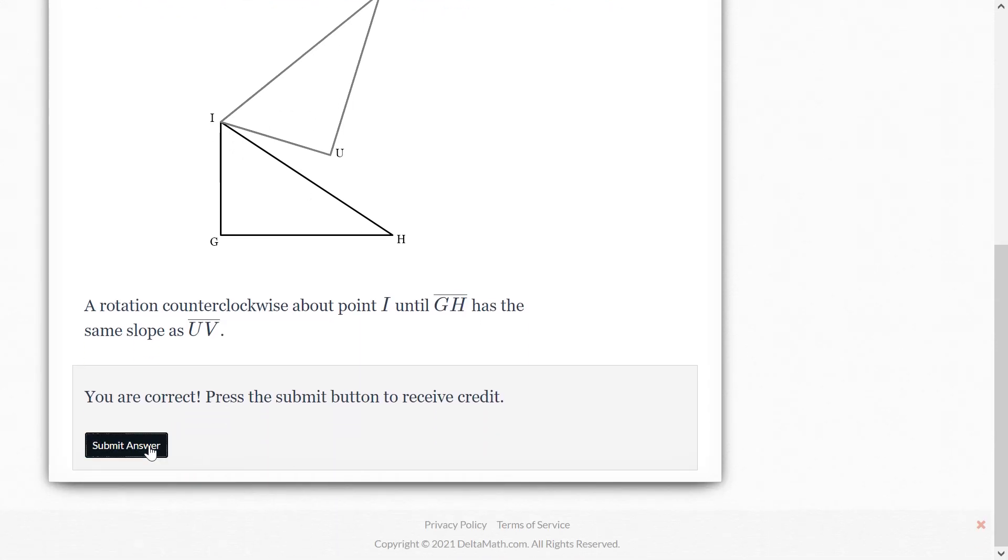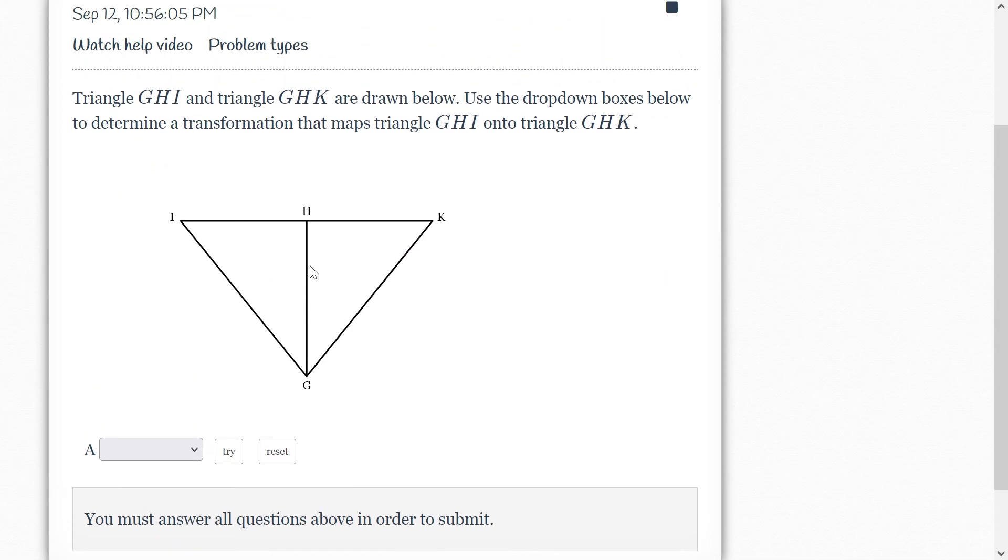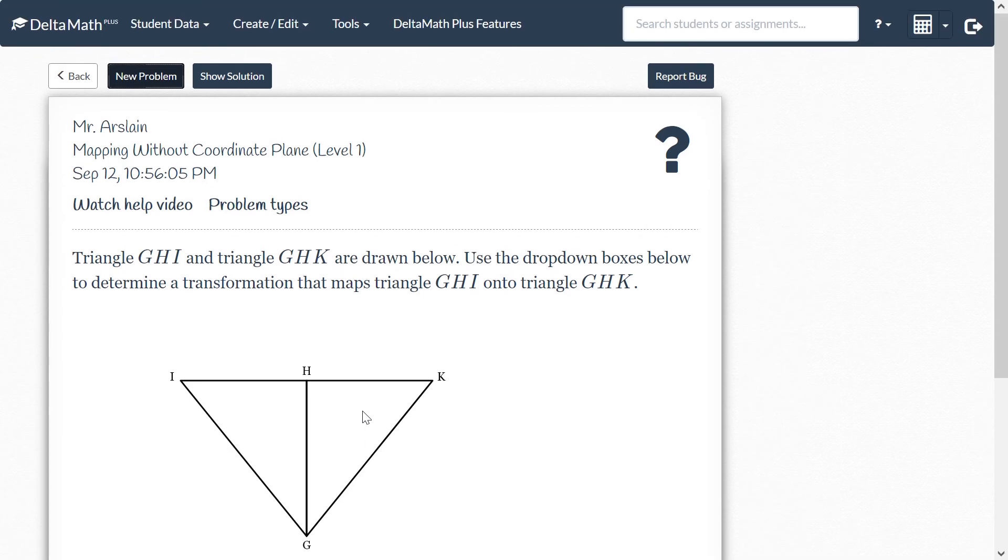And there you go. All right, so that's roughly what that one's going to look like. Let's see if you get a reflection, something like that. Notice in this case they'll ask you which line are you going to reflect about and you would just choose G H. So hopefully that's helpful. As always you can hit see example if you have any questions.